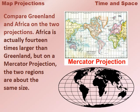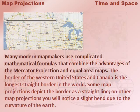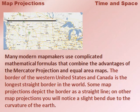Africa is actually 14 times larger than Greenland, but on a Mercator projection the two regions are about the same size. Many modern map makers use complicated mathematical formulas that combine the advantages of the Mercator projection and equal area maps.